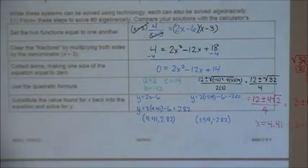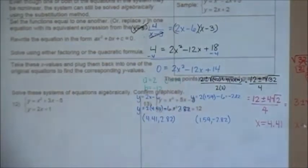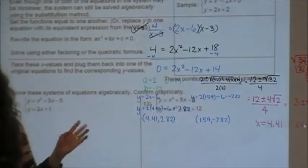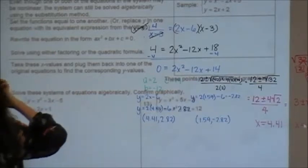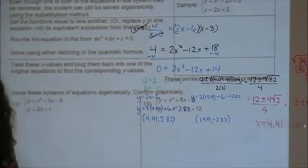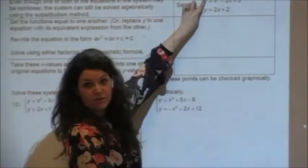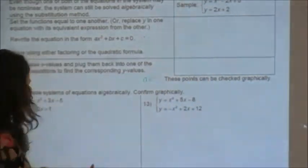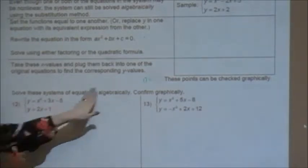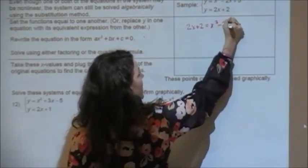It says at the top, even though one or both of the equations in the system may not be linear, they may be nonlinear, the system can still be solved algebraically by substitution. That's what we just did. If you think back way back to September when we did linear systems, we did substitution, elimination, and solving by graphing. What we're doing right here is just substitution. If the two things are both equal to y, then essentially what I'm doing is taking this y out and putting this in its place. So I'm going to set 2x minus 2 equal to x squared minus 2x plus 5.